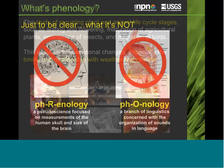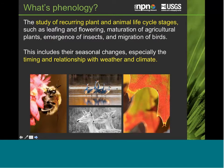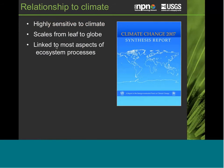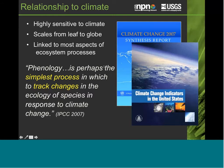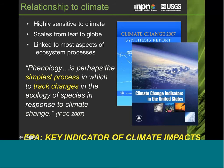Phenology has a strong relationship to climate, which is particularly clear because it is highly sensitive to climate, scales from leaf to globe, and is linked to most aspects of ecosystem processes. Because of this relationship, the IPCC — the Intergovernmental Panel on Climate Change — stated that phenology is perhaps the simplest process in which to track changes in the ecology of species in response to climate change. The EPA has also recognized this role and declared it a key indicator of climate impact.